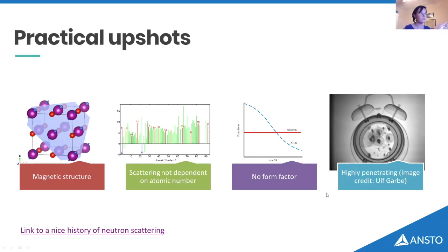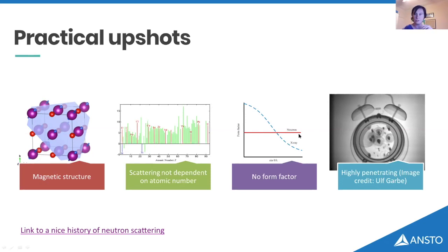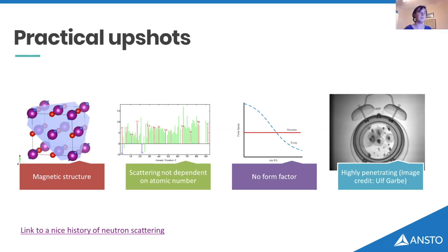Because the neutrons actually interact with the very nucleus, that's a point source rather than a cloud. The cloud scattering of X-rays causes what's known as the form factor, so you get a drop-off in X-ray scattering with angle. With neutrons we don't get that — we get constant scattering, which means we can have large detectors and get lots of data all the way around. And as I said, because our neutrons have a little mass and no charge, they're able to penetrate through materials that many other probes can't.